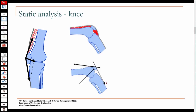Those two forces create a resultant which is the contact force of the patella. If this makes an angle gamma with the horizontal, this makes an angle alpha with the horizontal, and the resultant makes an angle phi with the horizontal, then you can find the magnitude of fp and the angle phi, or essentially the two components of fp, which is the compressive force.